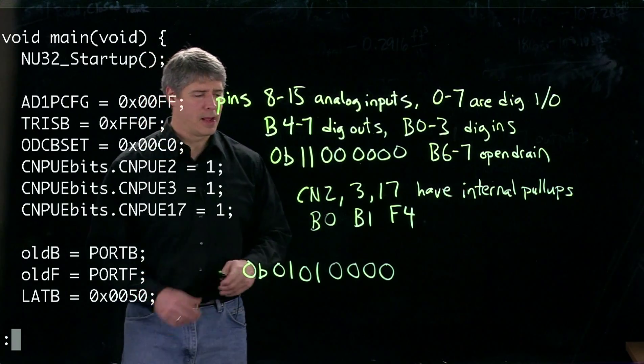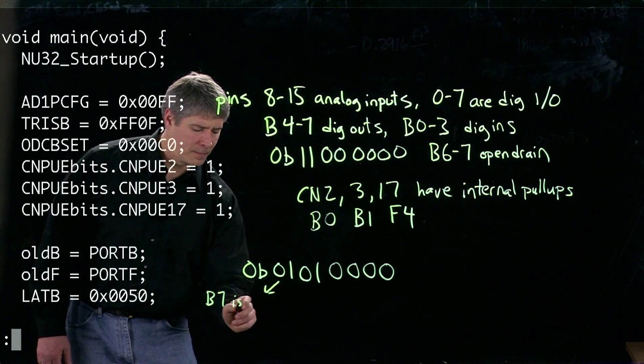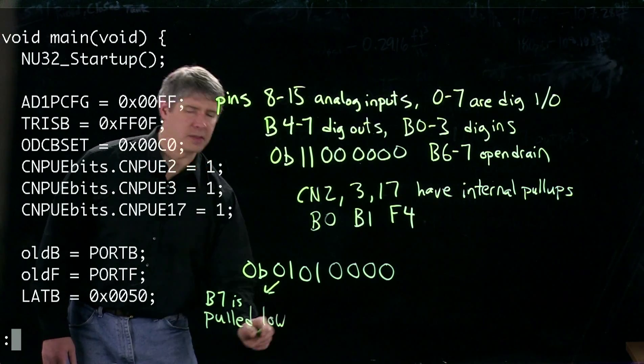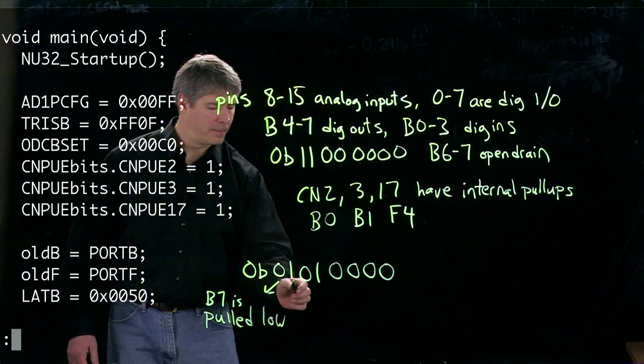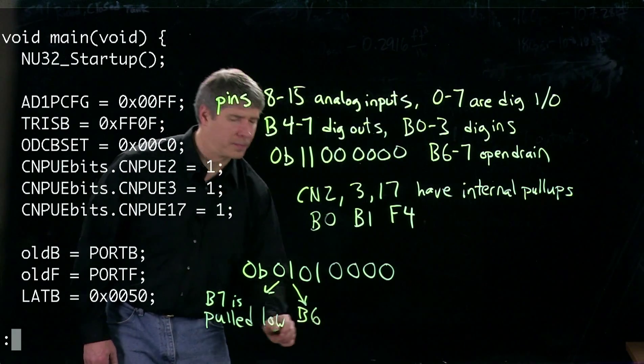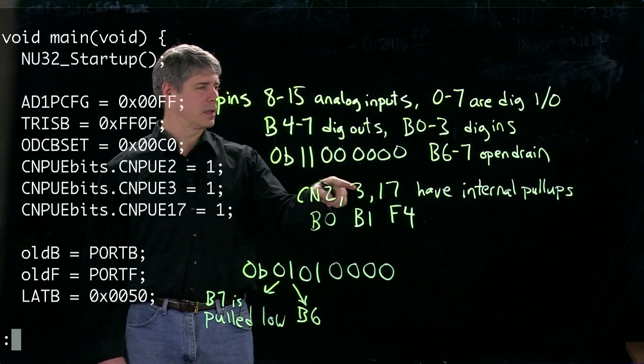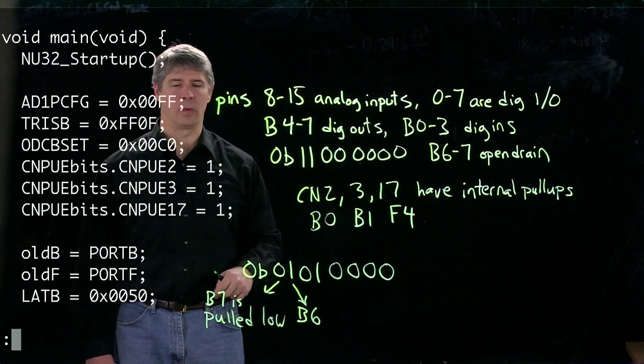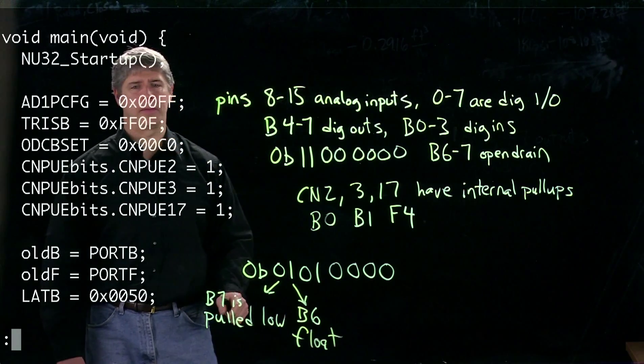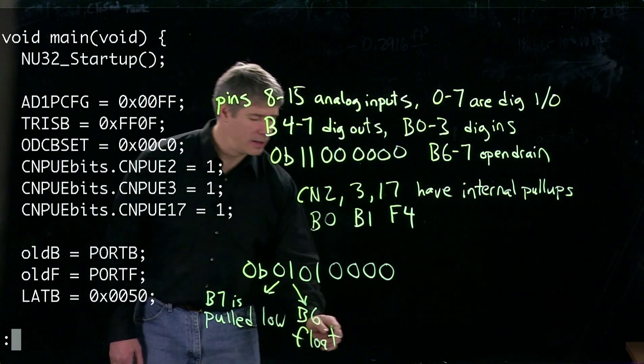Here are the values that we write. This means that B7 is pulled low, or to an output value of 0 volts. B6 is left floating. Since this was an open drain output, and by sending a 1 to it, we leave it floating. But probably we have an external pull-up resistor, so it's going to pull that voltage to high, so it floats to high.